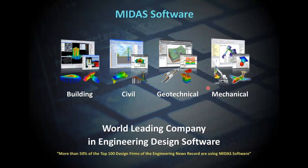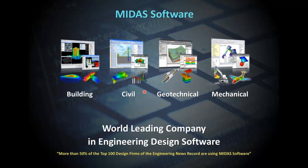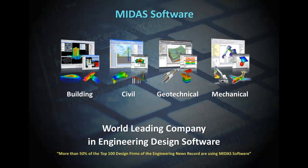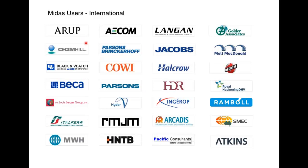Midas software is composed of four distinct areas: building, civil, geotechnical, and mechanical. We are the world-leading company in engineering design software — more than 50 percent of the top 100 design firms in the world are using Midas software day in and day out. This is just a partial list; you can name any of the top 100 companies.